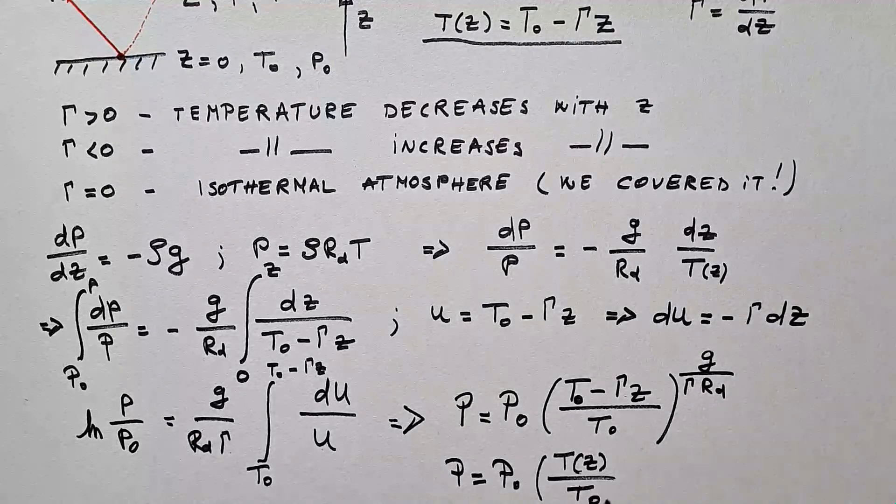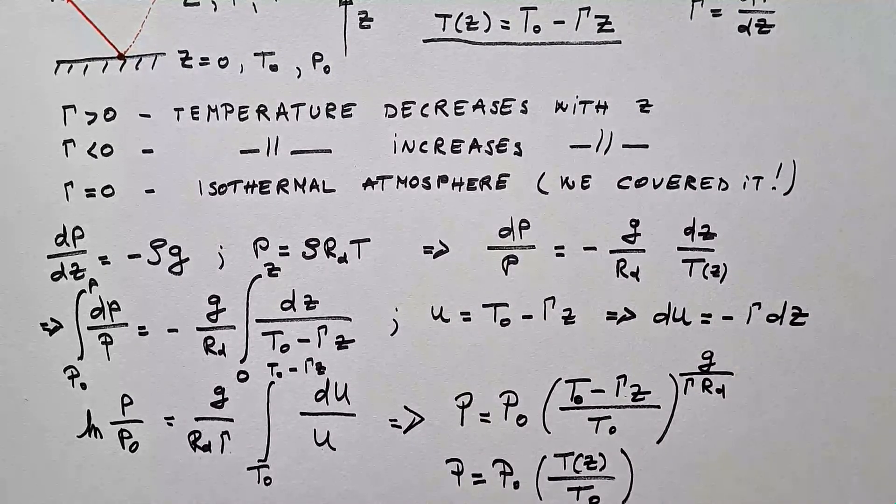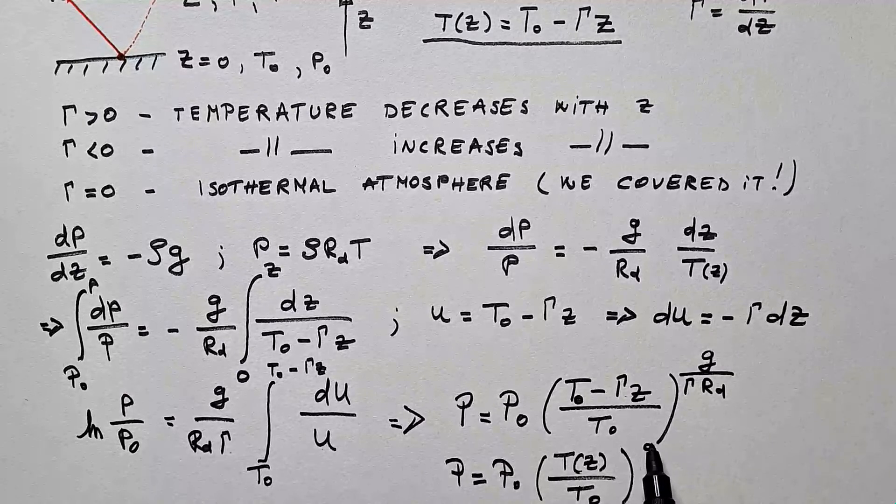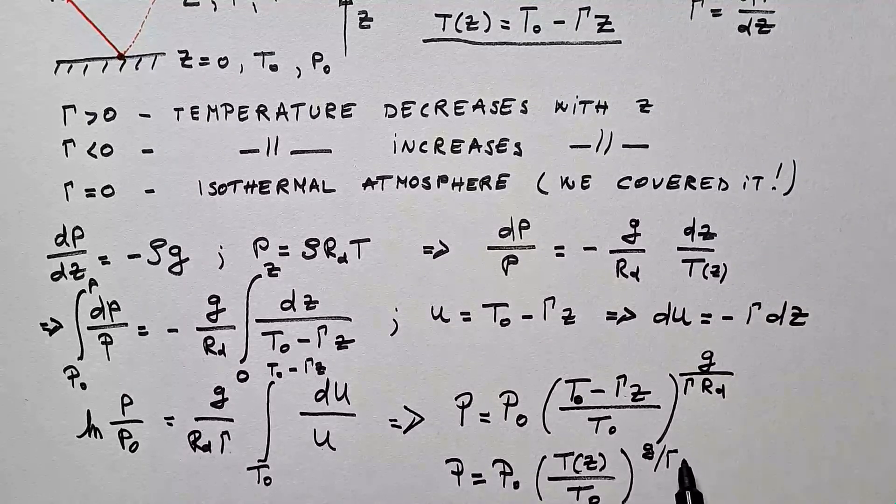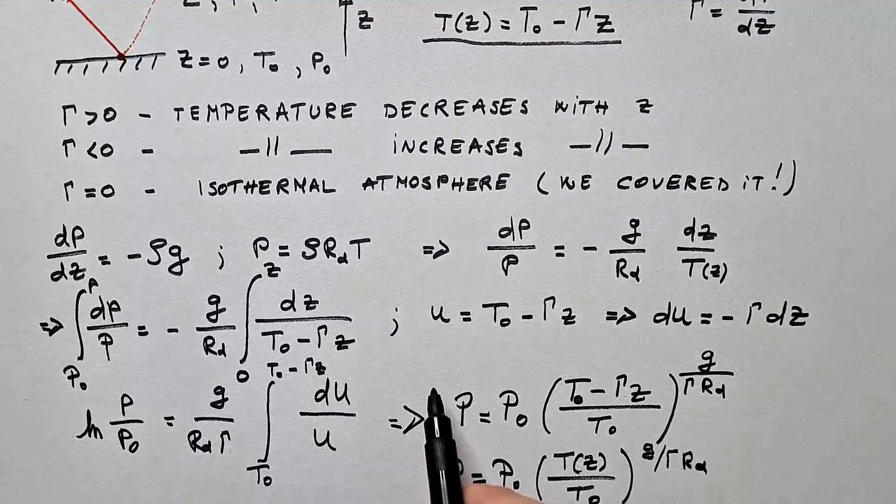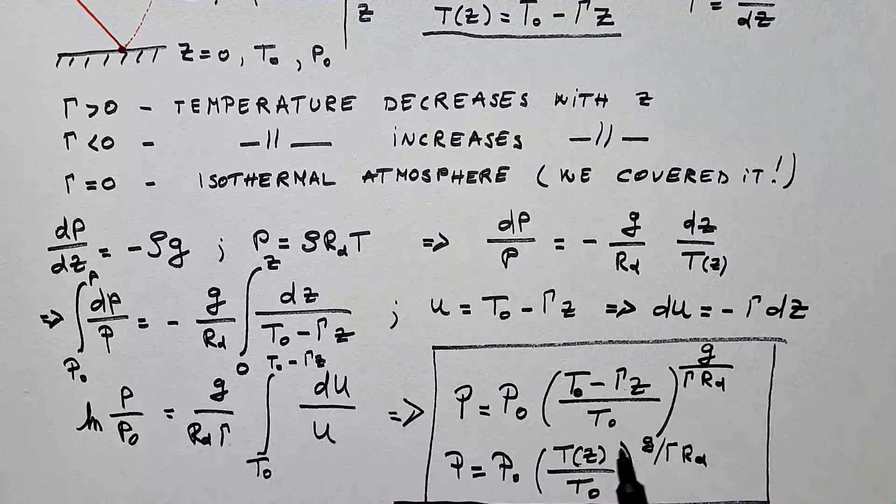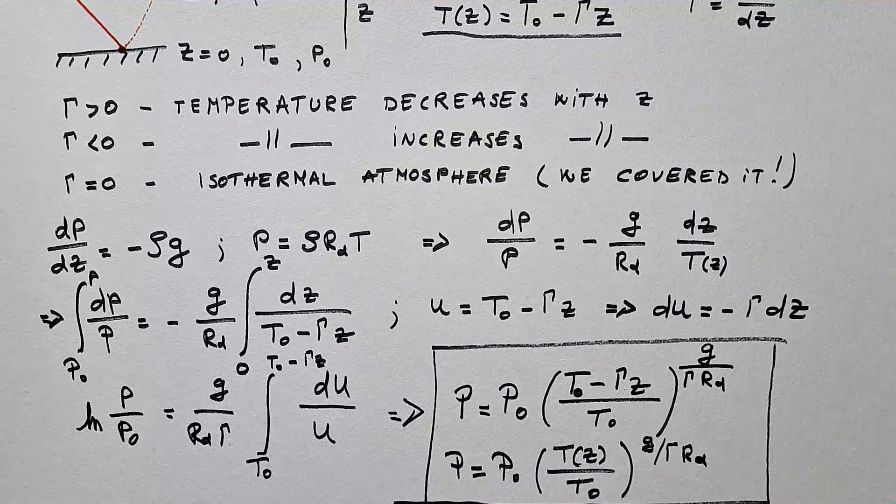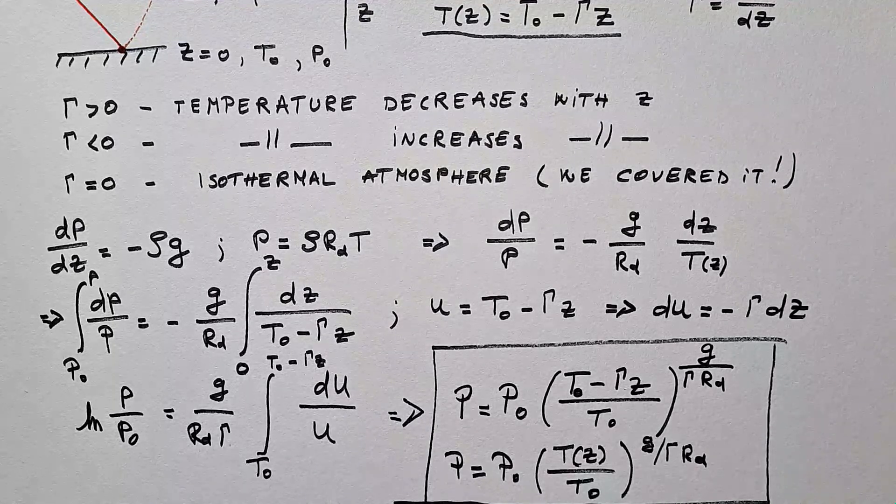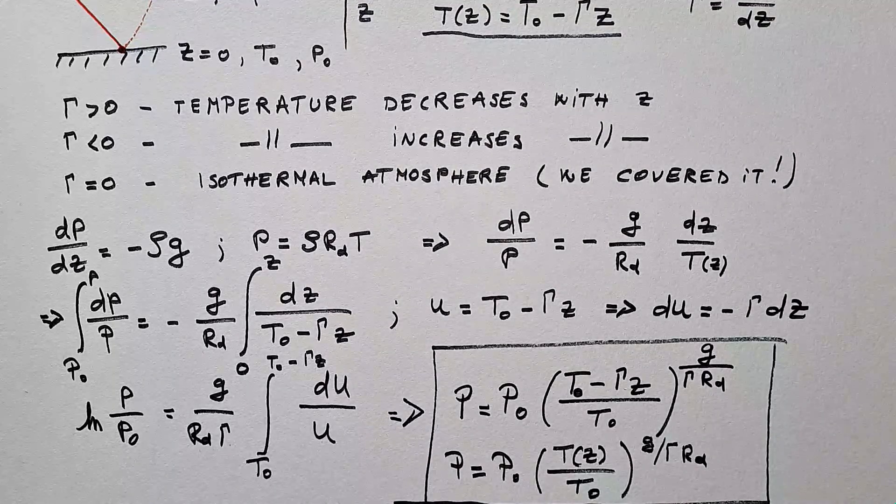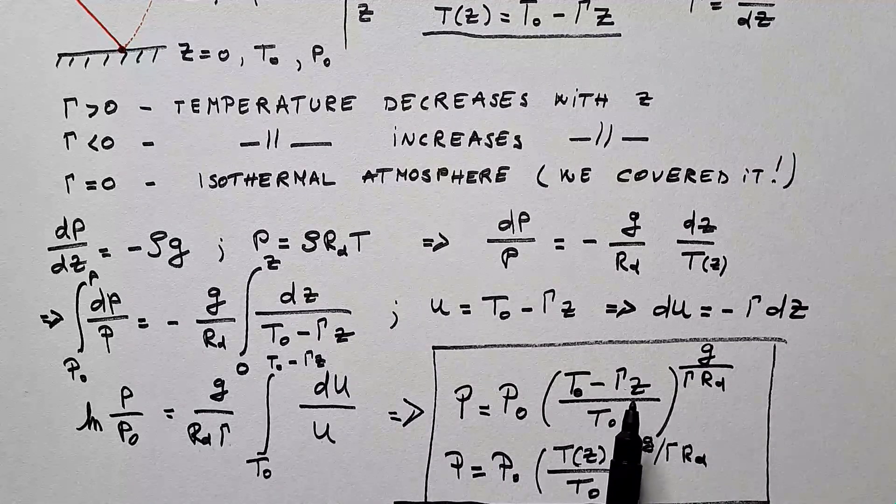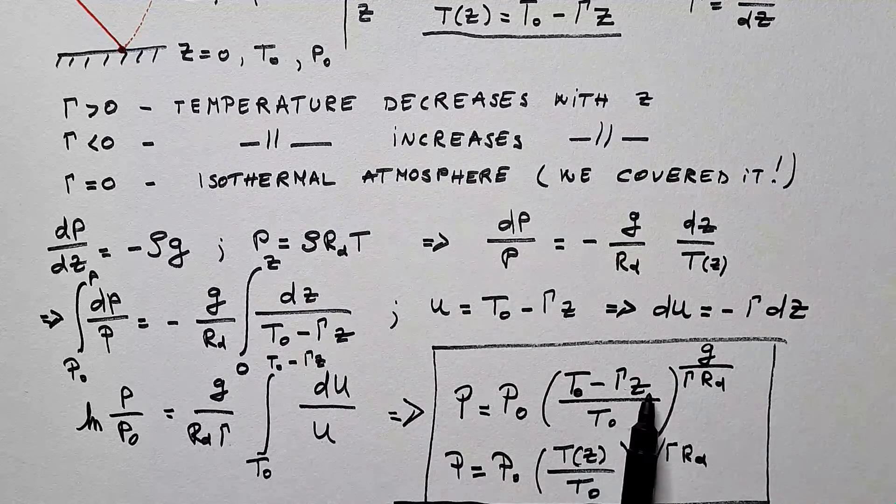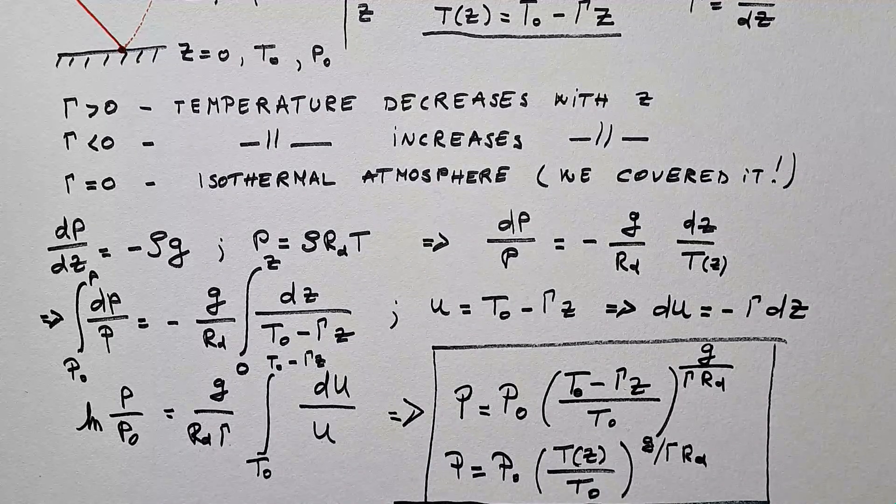over T₀ to this power g over γRd. And these two are, of course, the same expressions, and they tell us how the pressure changes with height in the atmosphere with the constant lapse rate.